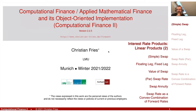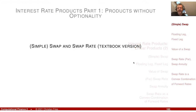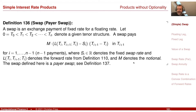In this next section, I'd like to define the swap and the swap rate. This is the textbook version, so it has some idealizations which I may comment on later. The swap is a very important financial product because it is heavily traded on the market, and I can also make comments later on why this is a popular product. It is a very important product because it has a certain advantage.